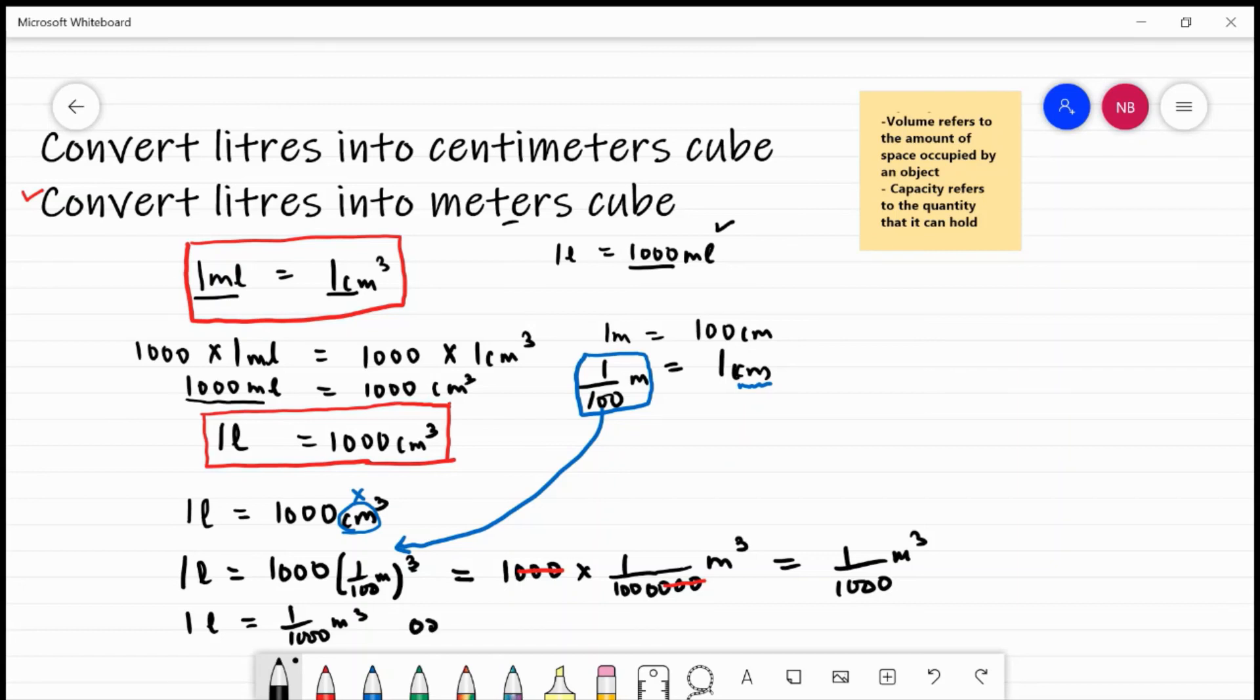Or I can also say that I can take this thousand there, you know, this transposition method. So I can write it as one thousand into one litre is equal to one metre cube.